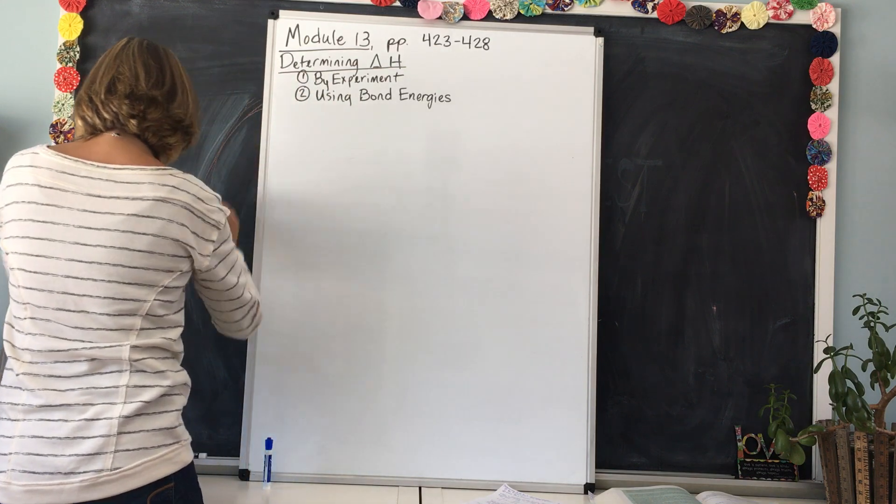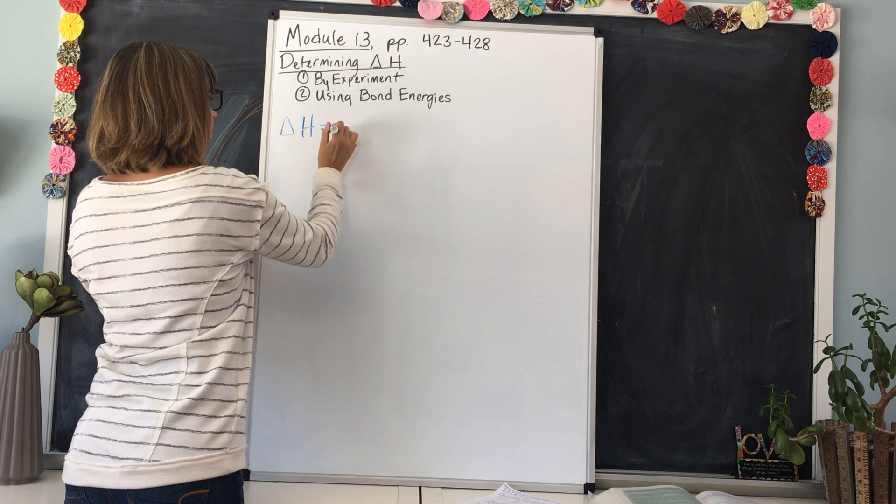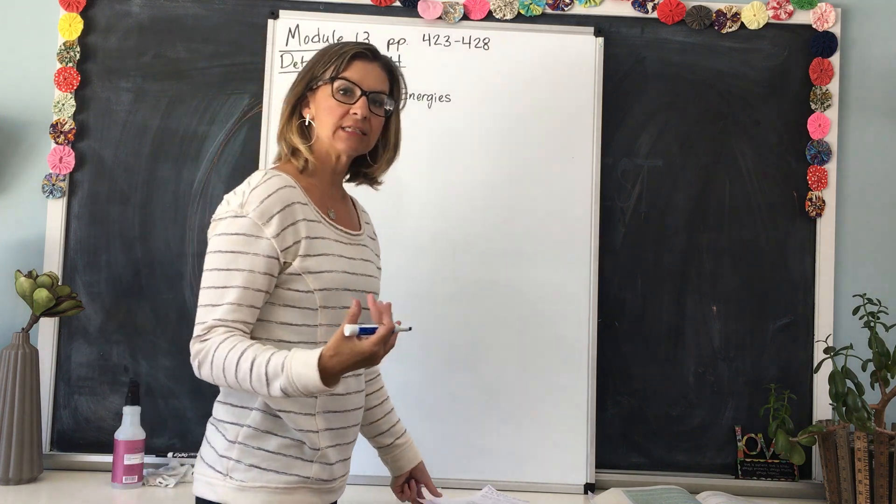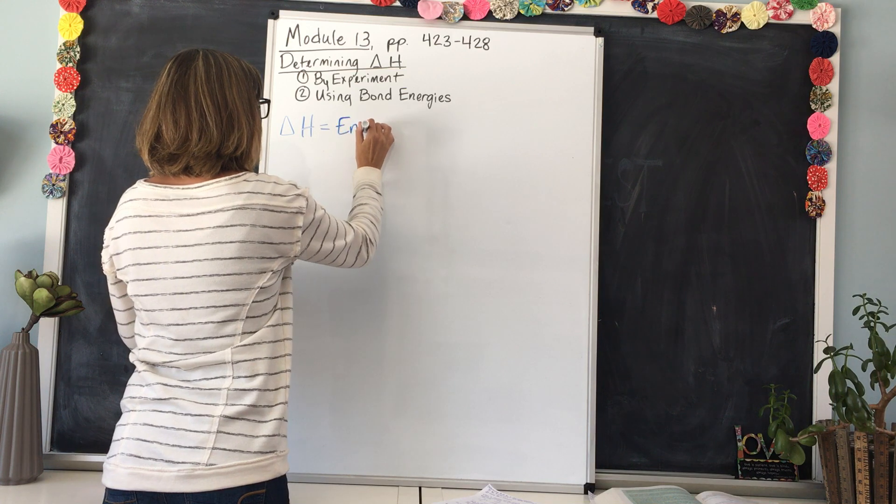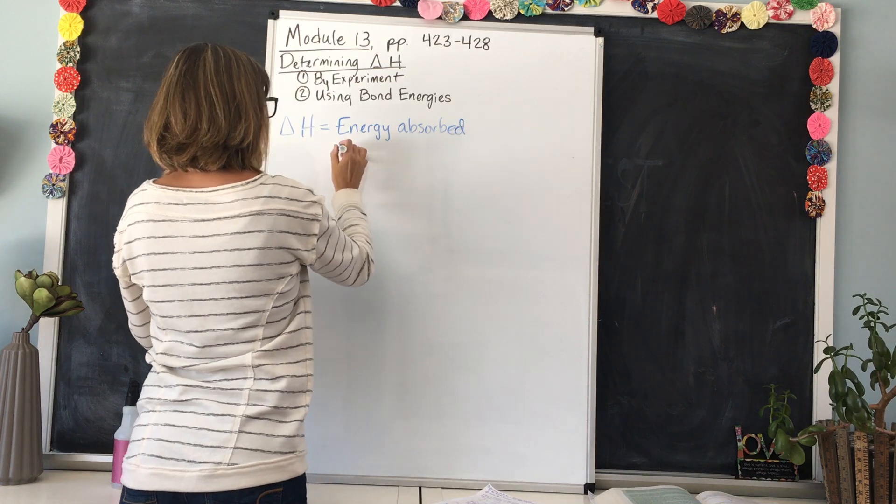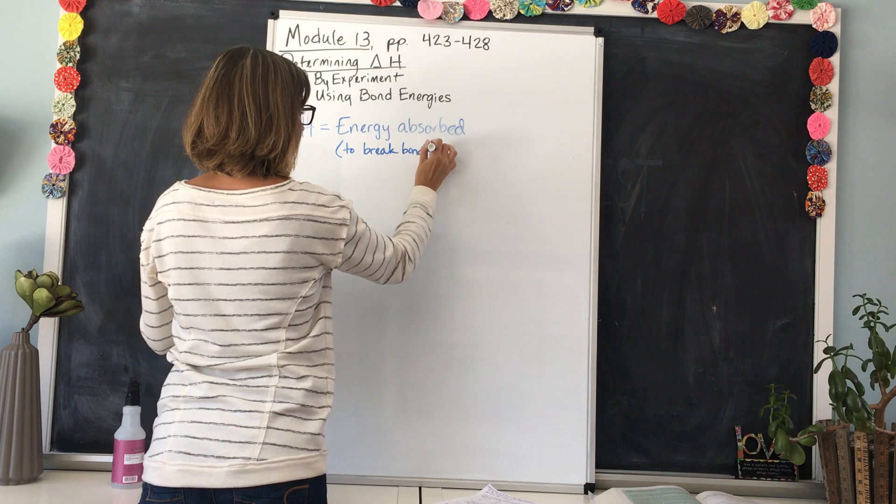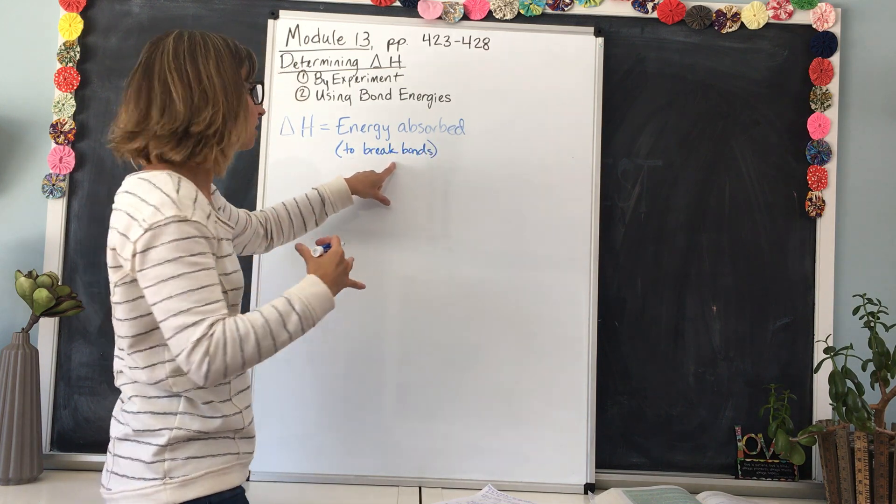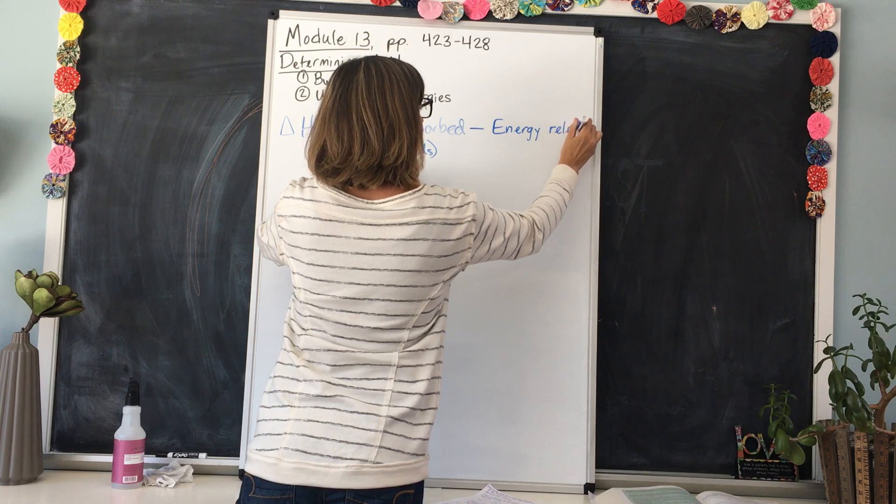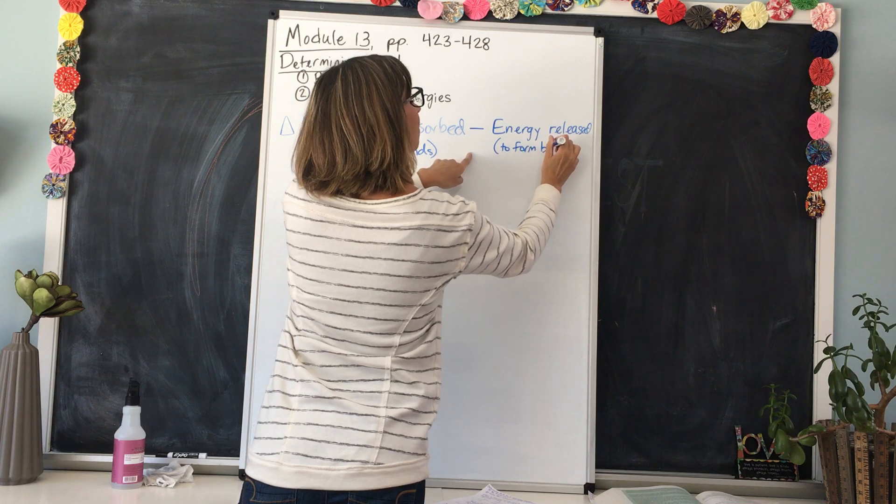Remember that delta H, the change in enthalpy, to find delta H we take the energy that's absorbed to break the bonds minus the energy that's released to form the bonds. So energy absorbed to break bonds, that's what's happening on the reactive side first, and then we subtract the energy released to form the bonds of the products.